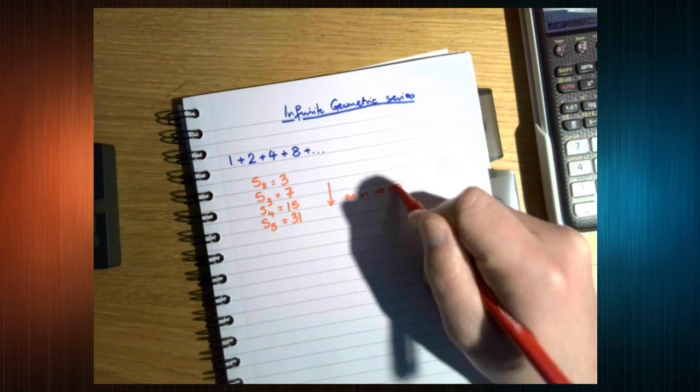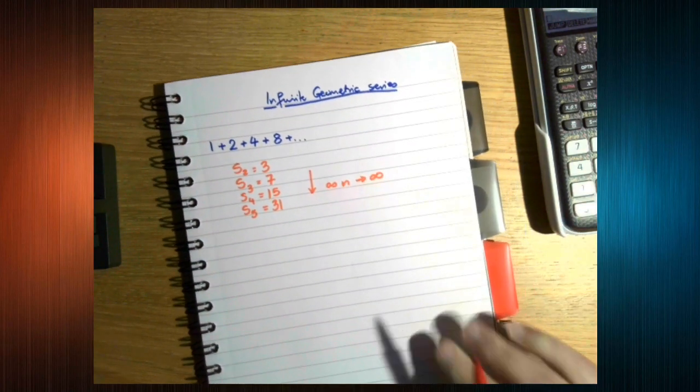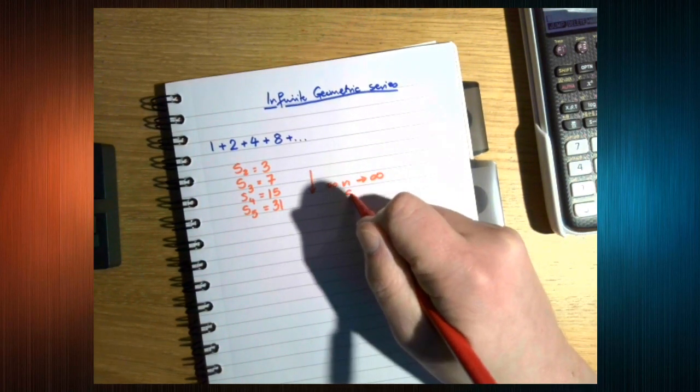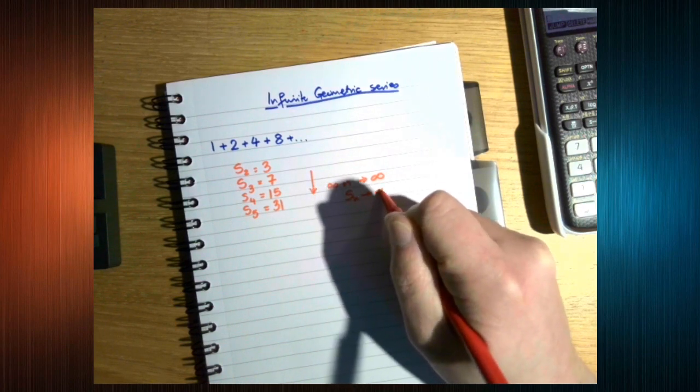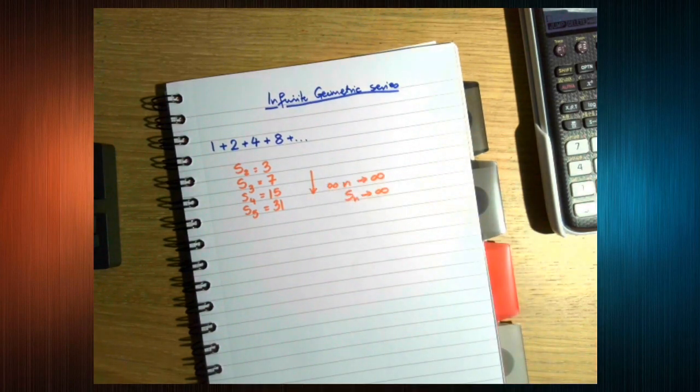As n gets bigger, the sum is just getting bigger and bigger. This is not helpful. Okay, why is that?